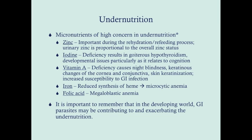If you're iron deficient, you'll have a reduced synthesis of heme, leading to a microcytic anemia. If you're deficient in folic acid, you'll have a megaloblastic anemia. Sometimes you can have both together and what looks like a normocytic anemia, but on the smear you'll note some macrocytic and some microcytic cells — a really long redistribution width. Don't forget about that.